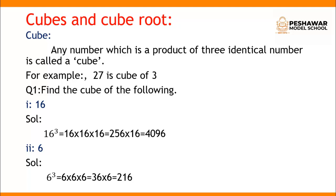Now find the cube of the following. First, 16³ = 16×16×16. We calculate: 16×16 = 256, then 256×16 = 4096. So the cube of 16 is 4096. Next, 6³ = 6×6×6: 6×6 = 36, and 36×6 = 216. So the cube of 6 is 216.